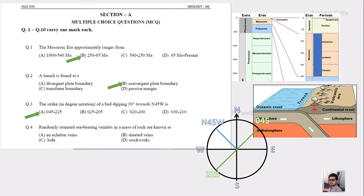The fourth question: randomly oriented ore-bearing veins in a mass of rock are known as? They gave the answer choices and asked for the question. If you see the enaclon vein, these are structures found by non-coaxial shear.